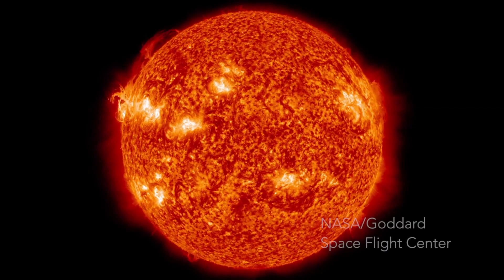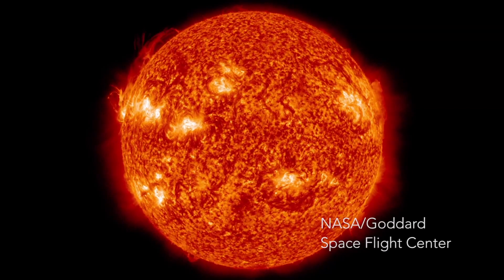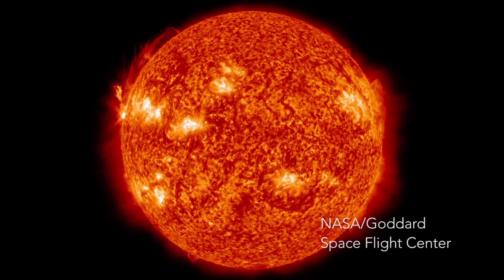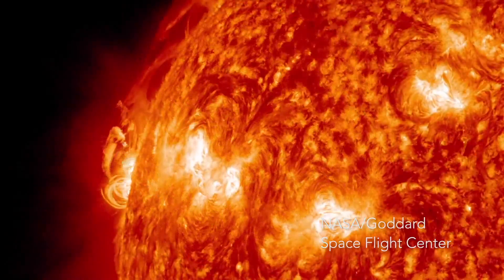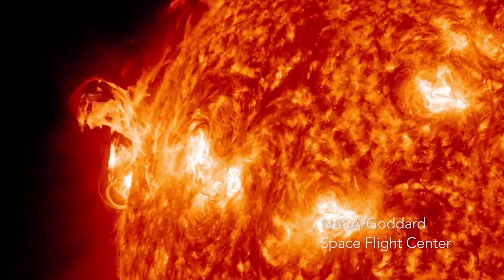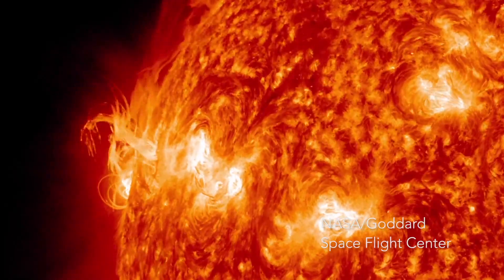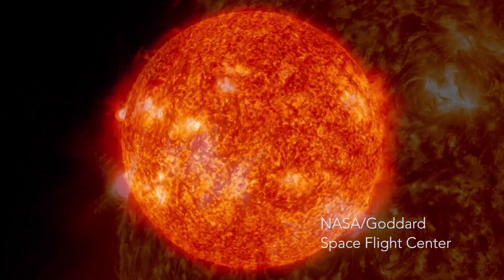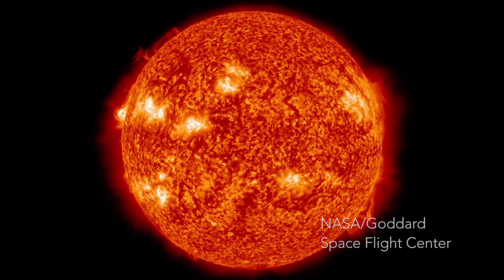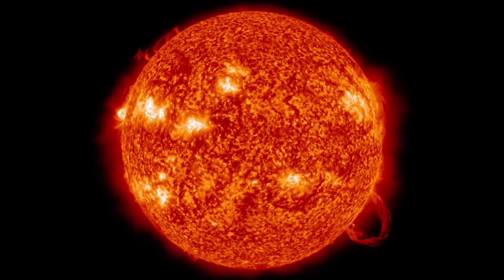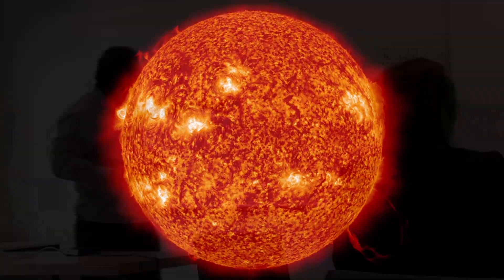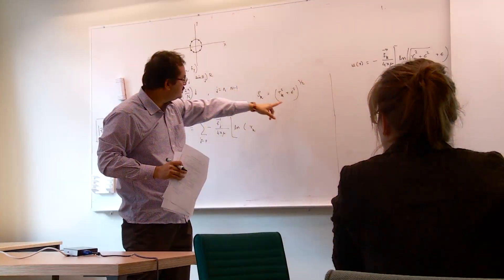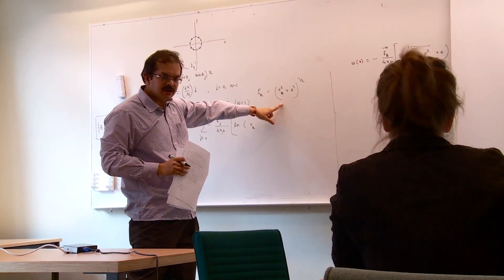Our Sun is a giant spinning ball of hot turbulent plasma that creates strong magnetic fields. The motion of the plasma, under the influence of gravity and the electromagnetic force, creates sunspots and solar eruptions, which have a significant effect on the Earth. Exactly how this happens is not yet entirely understood.